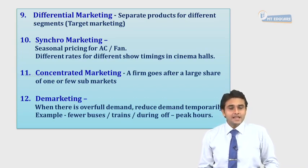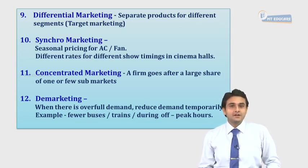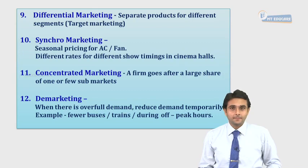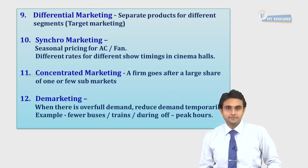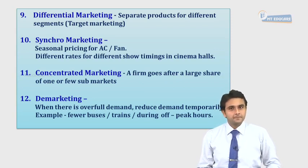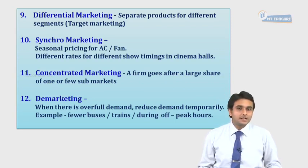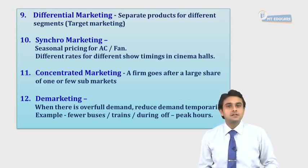Synchro marketing is usually for seasonal products or seasonal pricing. For example, the price of AC goes up in summer and drops in winter. The price of woolen articles goes up in winter and drops in summer. The demand for talcum powder generally goes up in the summer season and falls in other seasons, because people relate talcum powder as something to be used only in summer.